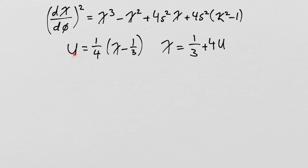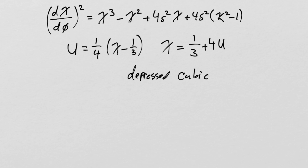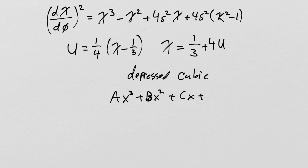Capital U has this interesting and historically famous form for those who've studied the cubic equation, just as most of us have studied the quadratic. This is a very famous substitution: U = (1/4)(χ - 1/3). Making this substitution — replacing χ everywhere with an expression in U — will eliminate the second-order term of the cubic equation, giving what is called a depressed cubic. A standard cubic AX³ + BX² + CX + D = 0 becomes depressed when B = 0.